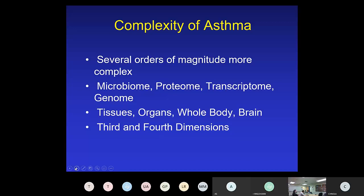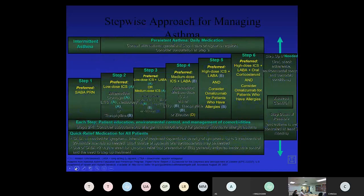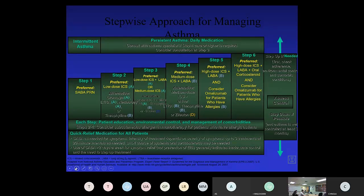The last EPR-3, now about 12 years ago, was the last NHLBI attempt to make a stepwise approach for managing asthma. You can see how complex it was 12 years ago — it's just as complex now, but NHLBI doesn't devote money to upgrading this. GINA, the Global Initiative in Asthma, generally updates their approach about every year to year and a half, so we'll talk about some of what they generated in the last year.